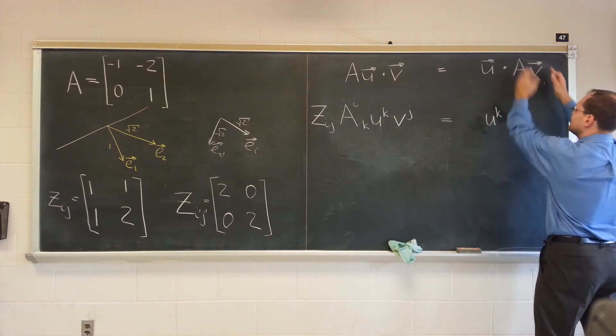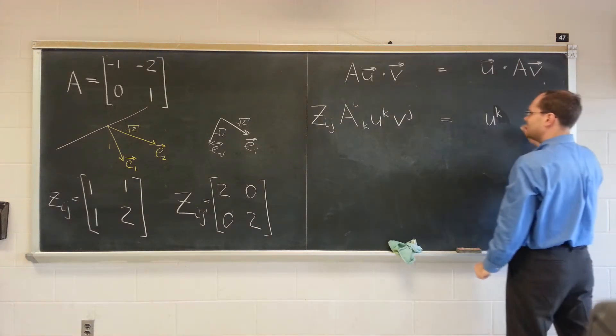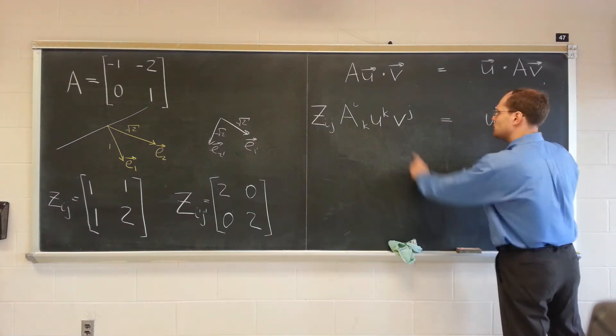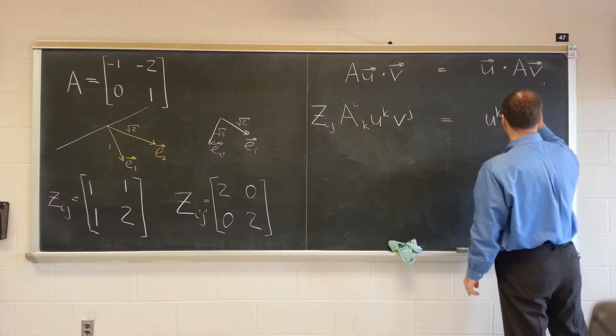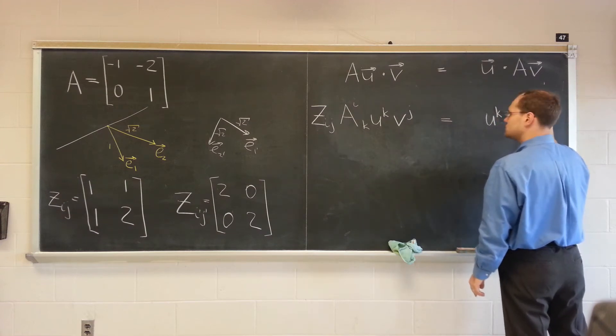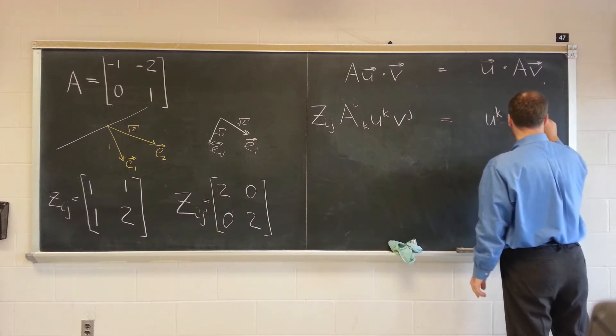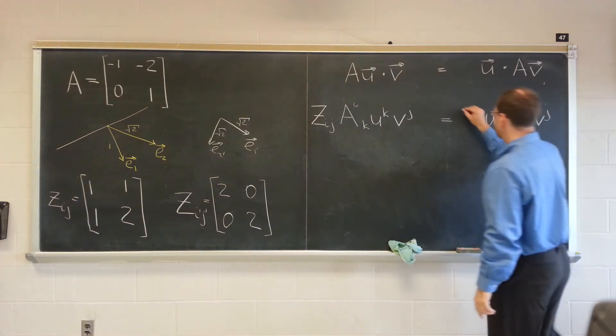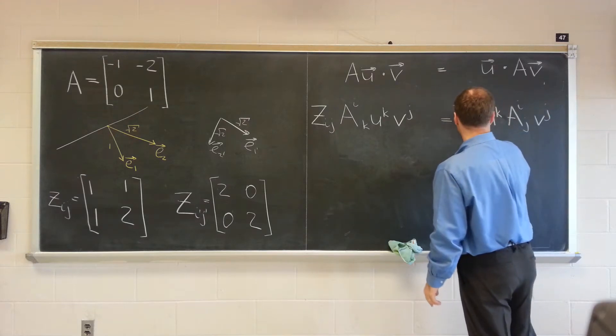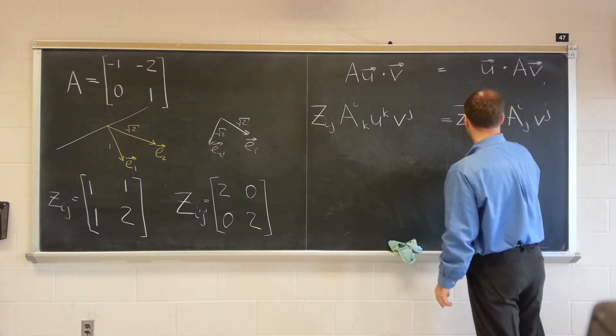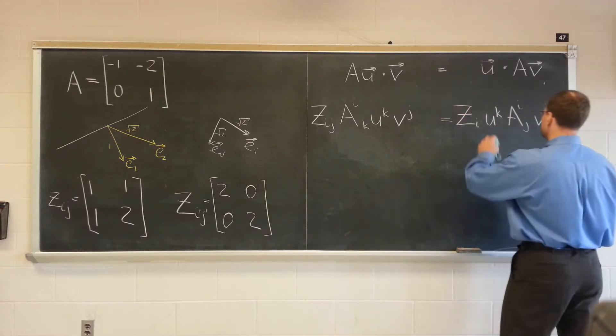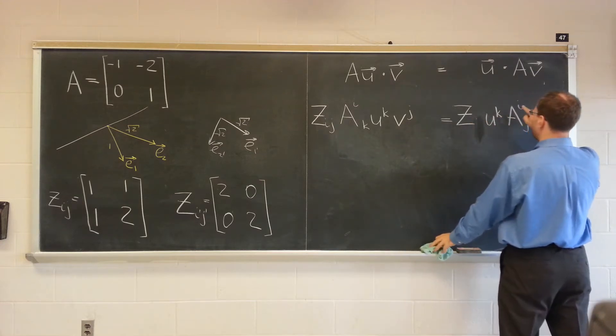And then we need to write down the component of Av. And I'll write it as A. So we want v_j. So I'll write it as A_ij v_j. And now we need to dot this and this. And of course it's the metric tensor that does the dot. Z_ij Z_ki.